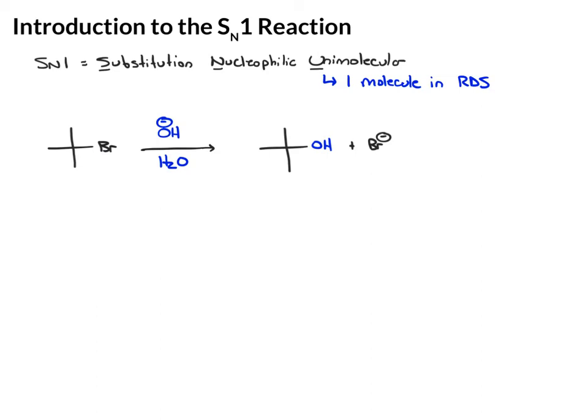So the way that the SN1 works is first we have loss of a leaving group. That's going to give us a carbocation, plus our leaving group that left, the bromide.